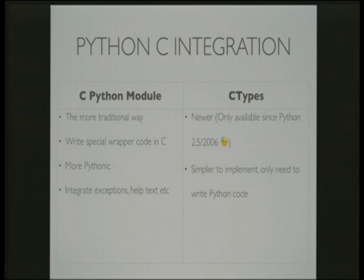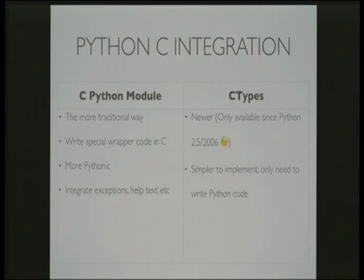The two main ways of integrating with C: you can either build a C module — a Python module written in C — and this is the more traditional way of doing it. You do have to write a lot of wrapper code in C, but ironically this does allow you to be more Pythonic, and you can integrate with Python exceptions, help text, and so on. ctypes is the newer way, and by newer I mean it's only been around since 2006. But it is simpler to implement, and you might not need to write any extra C code at all.